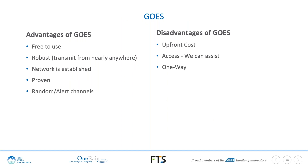GOES advantages: the biggest is that it's free to use — once you're granted access and given a channel and ID, there is no annual cost. It's extremely robust, proven, and well-established. The Random channel allows event-based transmission. The disadvantage is that the equipment has a larger upfront cost compared to some other options. It is also one-way communication. Access to the GOES system is broadly available and we can help advise on how to obtain it.